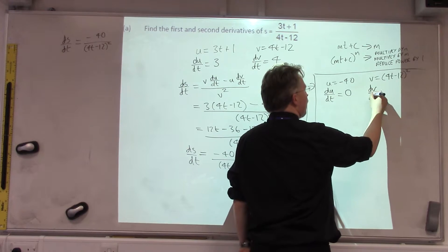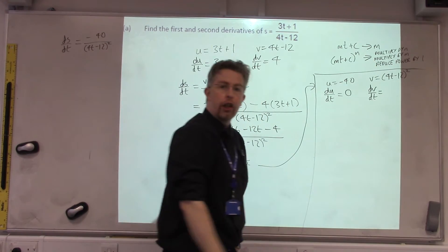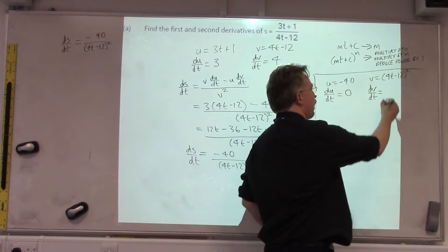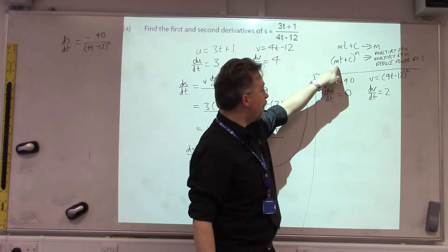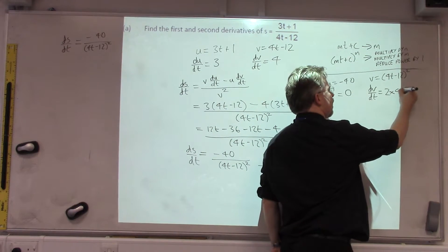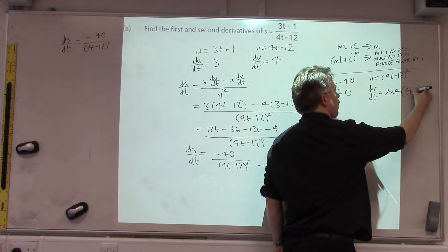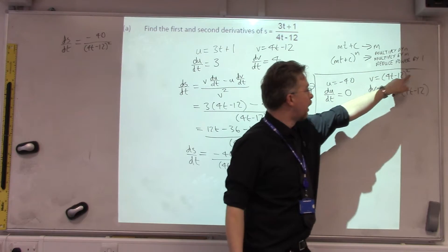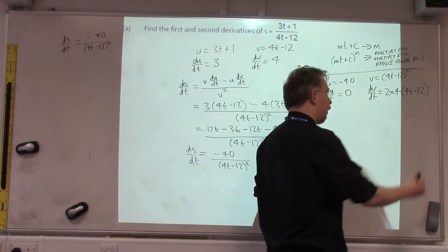The V by the T, we follow this new rule. So, we multiply by the N, the power, so we multiply by 2. We multiply by the M, the number in front of the T, so we times by the 4. We keep the bracket, but we reduce the power by 1. So, our power is 2, so we take 1 off it.